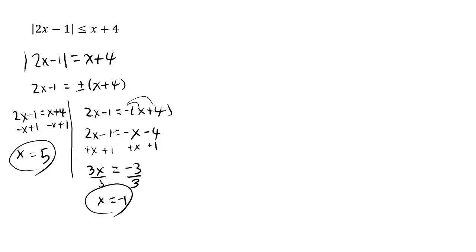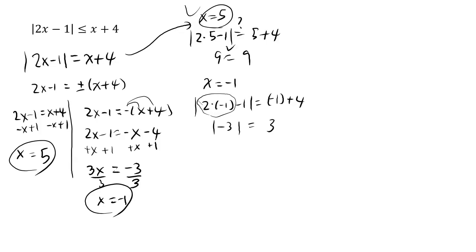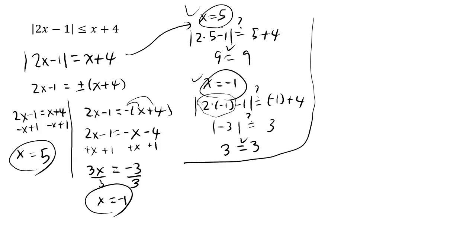Let's verify. For x equals 5: absolute value of 2 times 5 minus 1, which is 9, equals 5 plus 4, which is 9. That's correct. For x equals negative 1: absolute value of 2 times negative 1 minus 1, which is absolute value of negative 3, equals positive 3. And negative 1 plus 4 is 3. So 3 equals 3 — that's also correct. In this case, we had no extraneous solutions; both are genuine solutions.